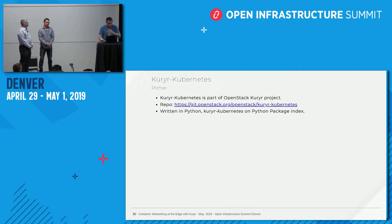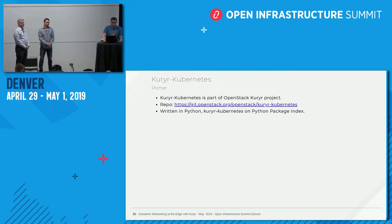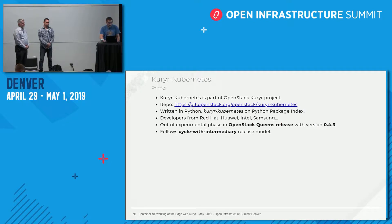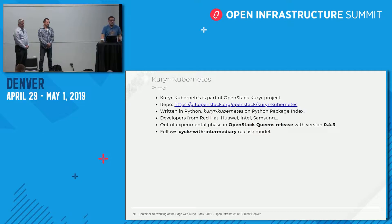We've been part of this project — the most active in development is called Kuryr-Kubernetes. It's mainly written in Python, although we are migrating some parts to Golang, and it's available on PyPI. Contributors include Red Hat, Huawei, Intel, and Samsung, among quite a few others. It's been around since the OpenStack Queens release, and we just released the first stable version in Stein — 1.0. We follow the release cycle with the intermediary release model, though this is tricky because we also have to take Kubernetes releases into consideration.